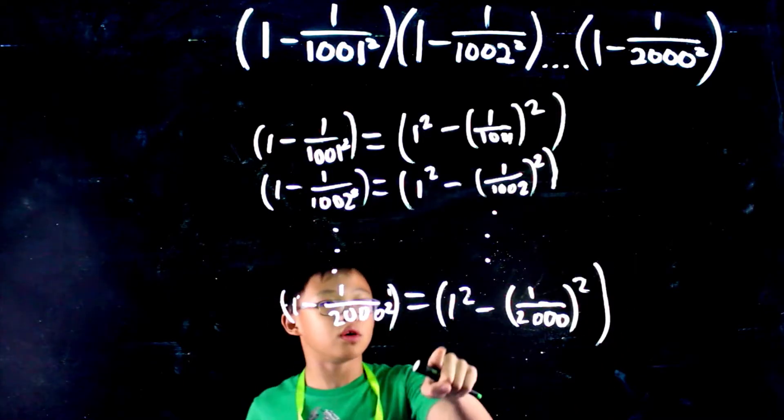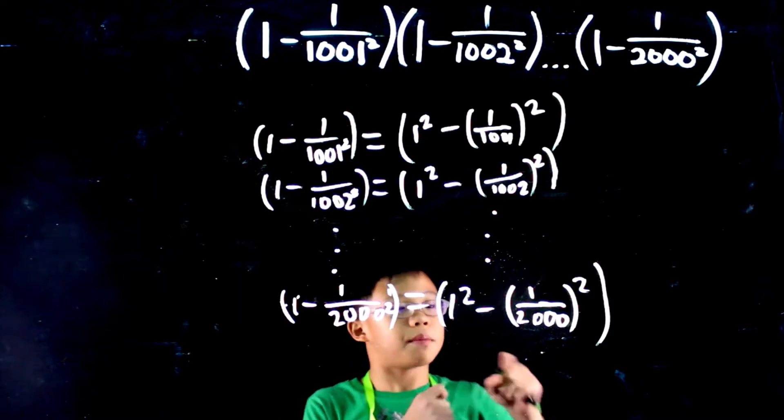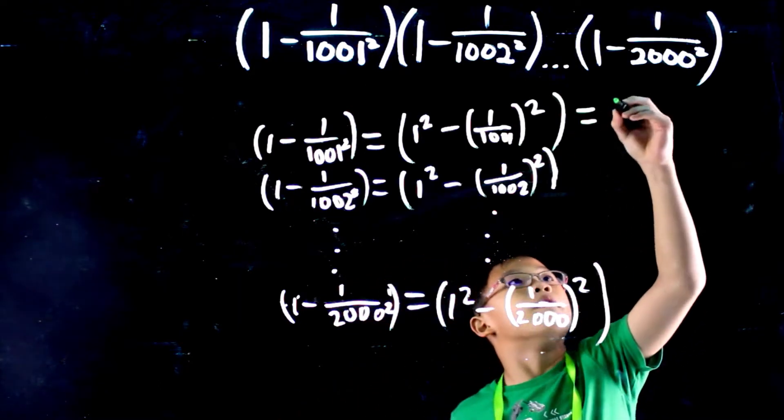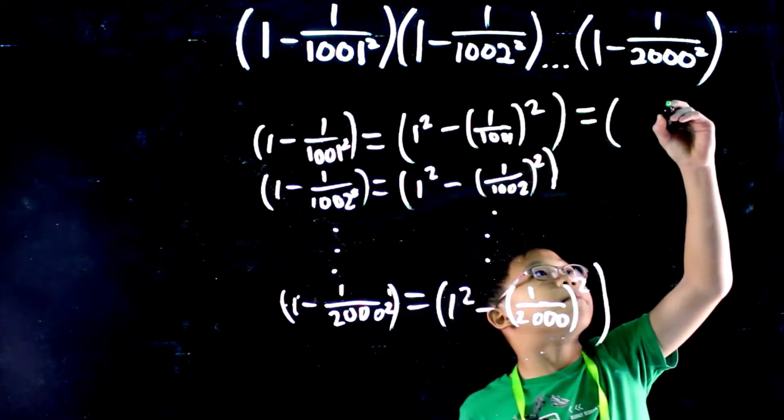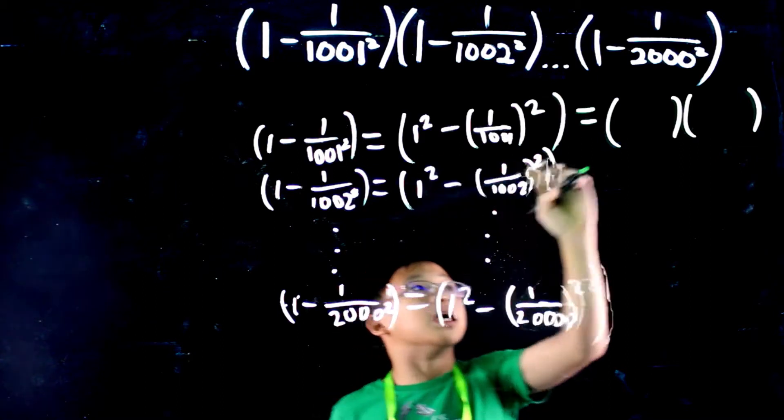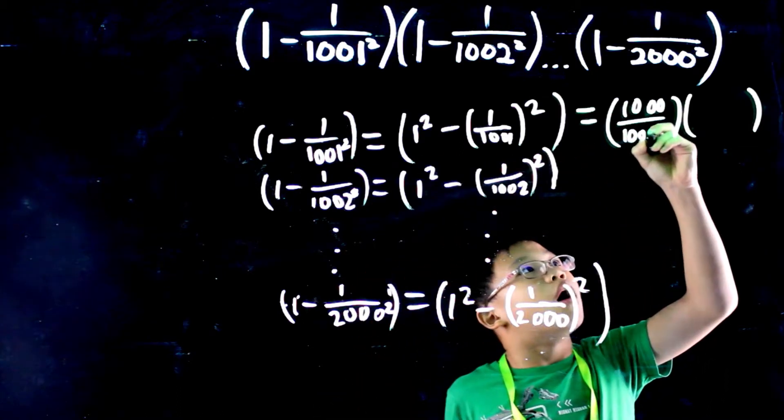And now, we know that a squared minus b squared is a minus b times a plus b. So we know this equals a minus b times a plus b. And a minus b is 1000 over 1001.